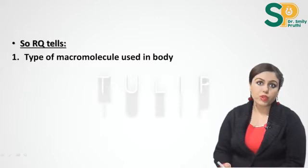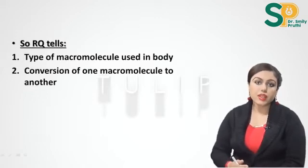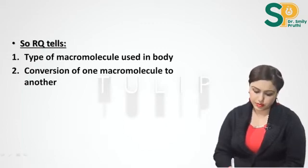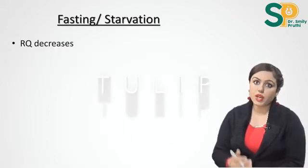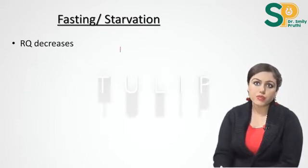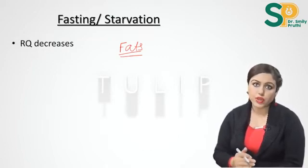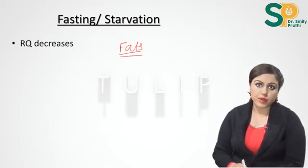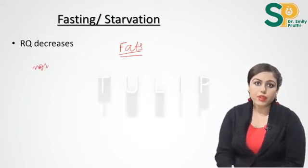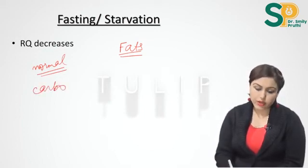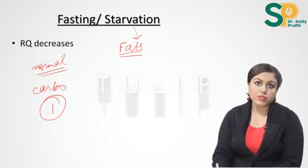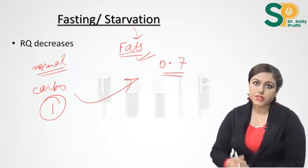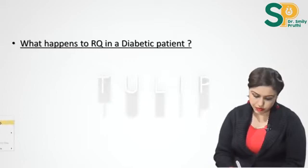Similarly, when fats are converted to carbohydrates, RQ will decrease. RQ can therefore tell us the type of macromolecule being used in the body and also indicate conversion of one macromolecule to another. In fasting or starvation, RQ decreases because fats are being used — adipose tissue breaks down to release fatty acids which go to the liver for breakdown. In a normal fed state, the body mainly uses carbohydrates so RQ is 1, but in fasting or starvation when fats are used, RQ is 0.7.